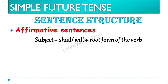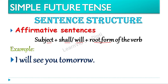Toh pehle dekh lete hain what are affirmative sentences in simple future tense. Isme jo rule follow hota hai — first we'll write the subject, and then shall ya phir will lagayenge, aur phir uske baad root form of verb lagayega. Means the verb which is placed over here is in its base form. For example: I will see you tomorrow. Toh I yaha par subject hai, will lagaya hai, and see hai root form of the verb.